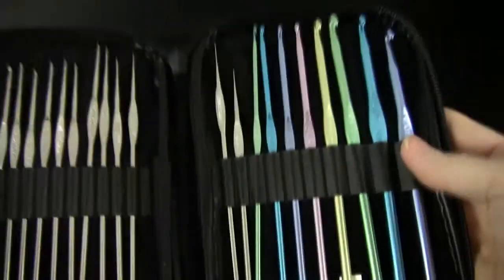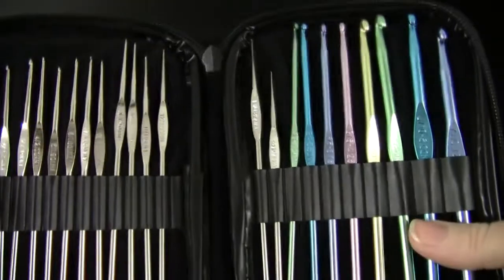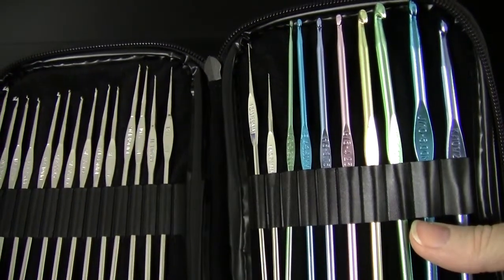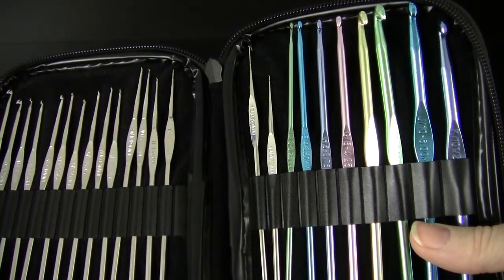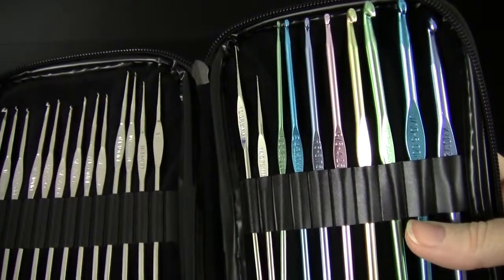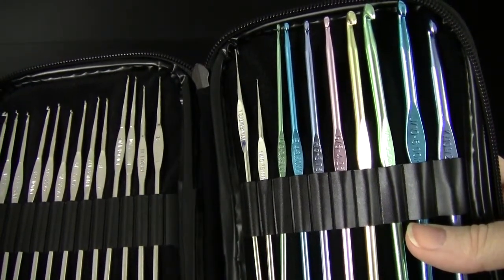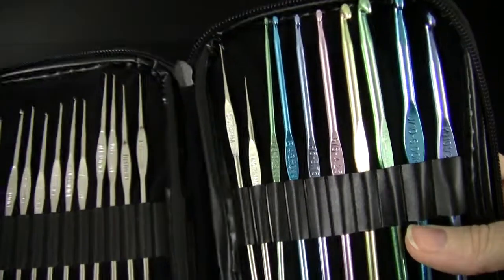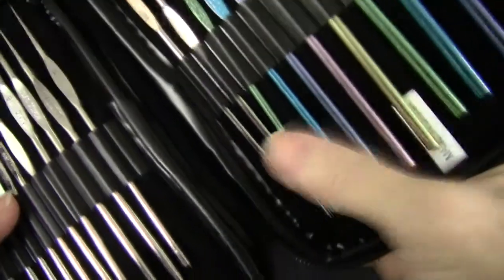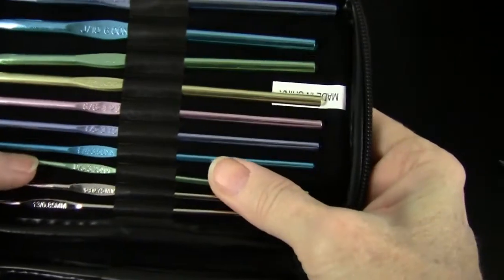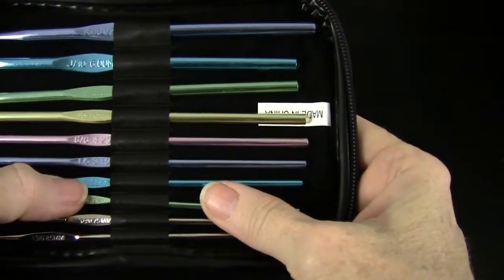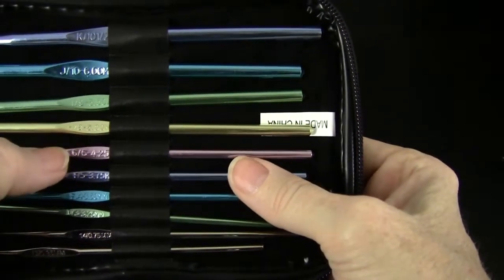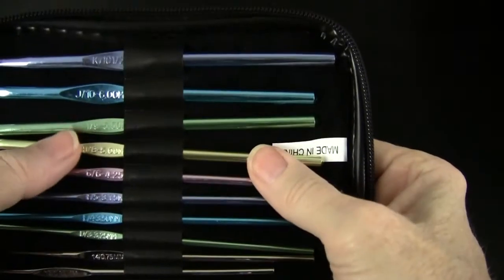Now I'm back to the hooks. The aluminum hooks range from D, E, F, G, H, I, J, and K. That's equivalent to—let's see—3.25, 3.5 (this is all in millimeters), 3.75, 4.25, 5, 5.5, 6, and 6.5.